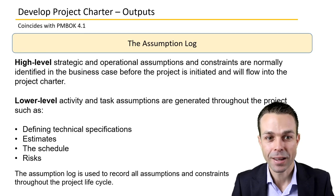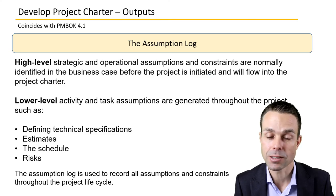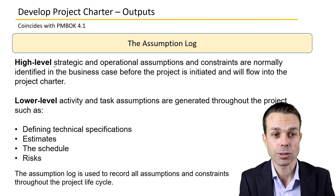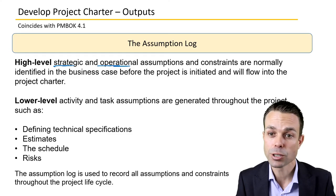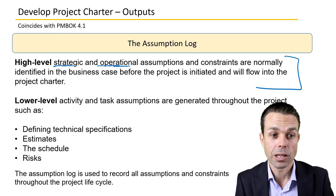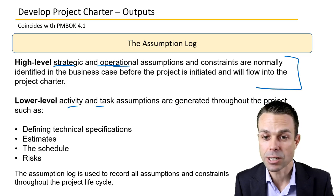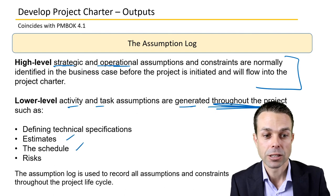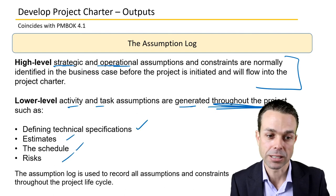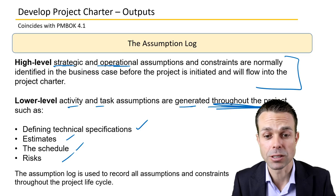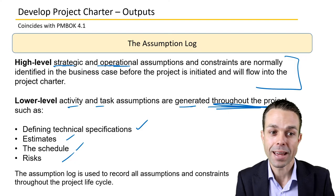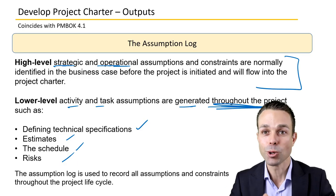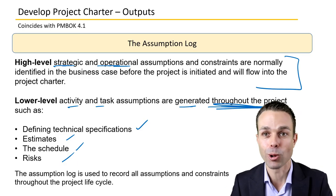Lastly, the assumption log. We make assumptions when doing this high-level document, and we just need to record what assumptions have been made. High-level strategic and operational assumptions will have been made and put into the document. Lower-level activity and task assumptions are usually generated throughout the project as we go along, and those will include estimates, schedule, risks, and technical specifications. The assumption log is used to record all assumptions and constraints throughout the project lifecycle, and it starts at a high level when we're developing the project charter. And those are the inputs, tools and techniques, and outputs — a general overview of developing the project charter.